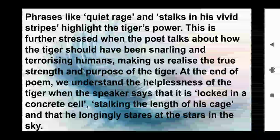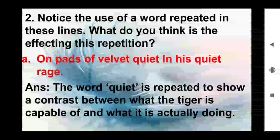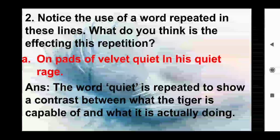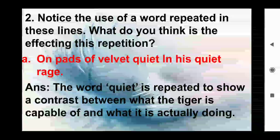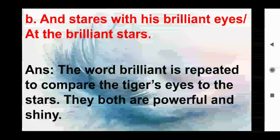Question 2: Notice the use of the word repeated in these lines. What do you think is the effect of this repetition? Part (a): 'On pads of velvet quiet, in his quiet rage.' Answer: The word 'quiet' is repeated to show a contrast between what the tiger is capable of and what it is actually doing. Part (b): 'And stares with his brilliant eyes at the brilliant stars.' Answer: The word 'brilliant' is repeated to compare the tiger's eyes to the stars — they both are powerful and shiny.